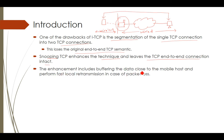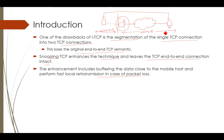The enhancement includes buffering the data close to the mobile host and performing fast local retransmission in case of packet loss. Snooping TCP uses a buffering element — the foreign agent — closer to the wireless device. It stores all data transferred from the correspondent node and retransmits whenever a packet gets lost between the mobile device and the access point. Let us understand the architecture properly.